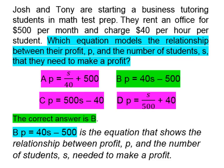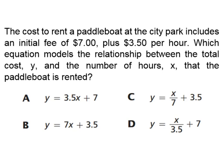So our correct answer choice is B. In order to find out how much Josh and Tony would need to make a profit, it would be P is equal to 40 times S — that means 40 times the number of students — minus 500.